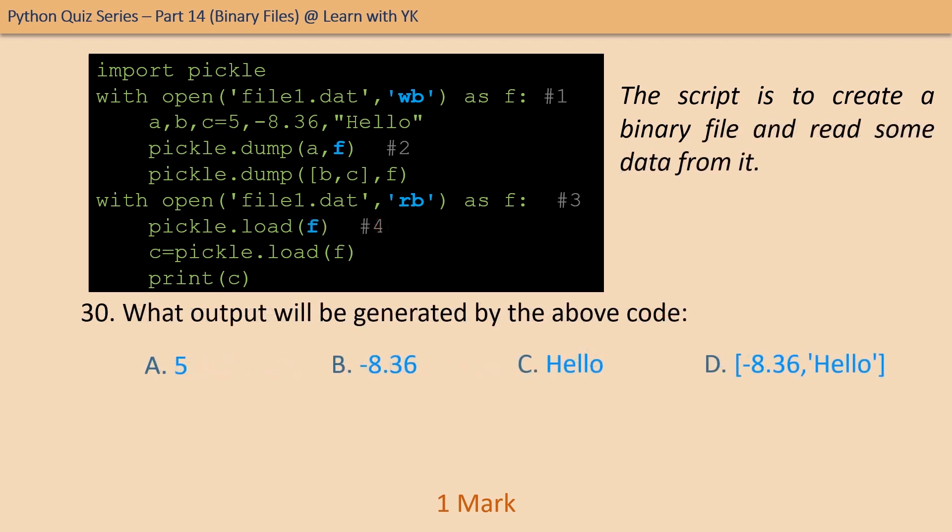Question number thirty: what output will be generated by the above code? Now that you have completed the code, tell what output will be generated. The correct option is option D.